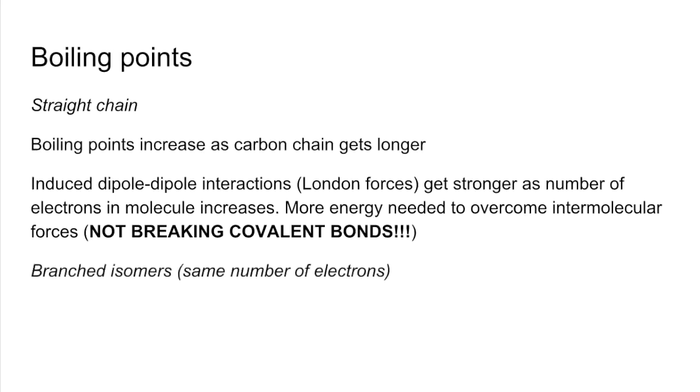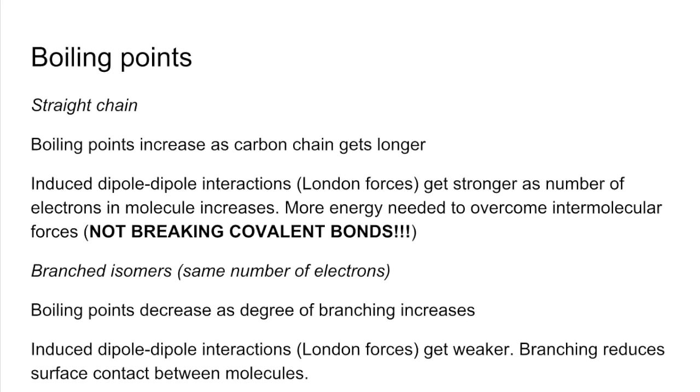If we look at branched isomers now, they've got the same number of electrons. When you have branched isomers, the boiling points decrease as the degree of branching increases, because more branching means the induced dipole-dipole interactions get weaker. Branching reduces the ability for the molecules to close pack, or reduces their surface contact.